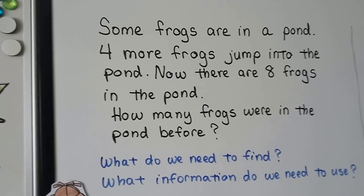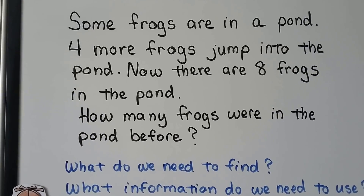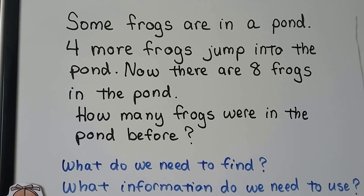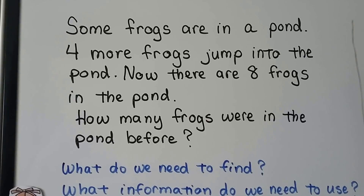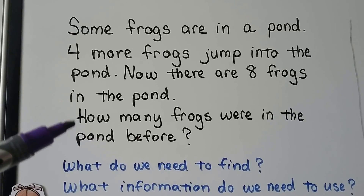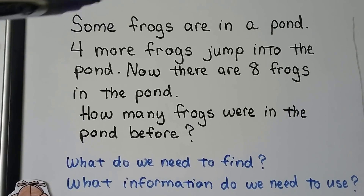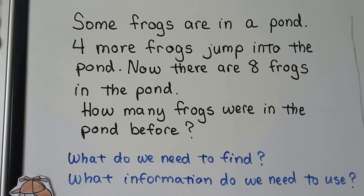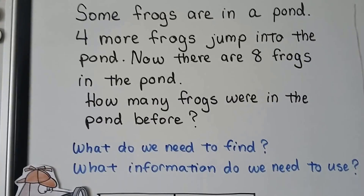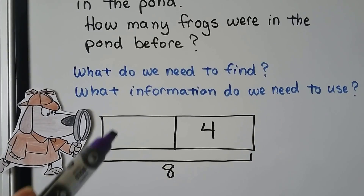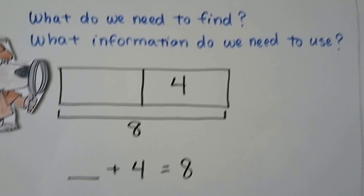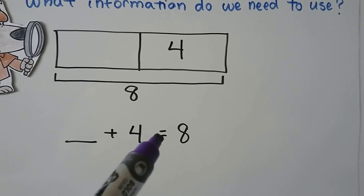Some frogs are in a pond. Four more frogs jump into the pond. Now there are eight frogs in the pond. How many frogs were in the pond before? We need to find out how many those some frogs is. We need to know that four more frogs jumped in and now there are eight. Something plus four is equal to eight.